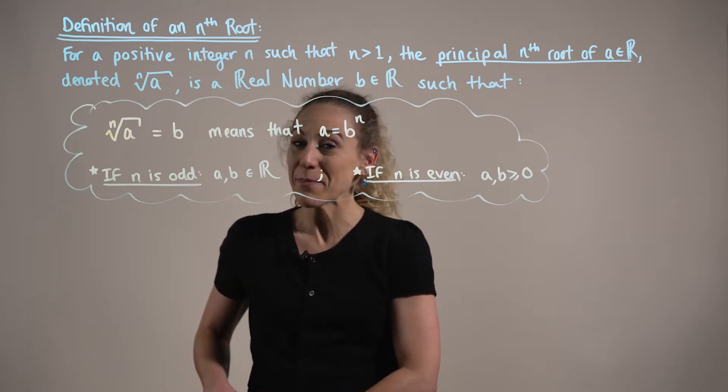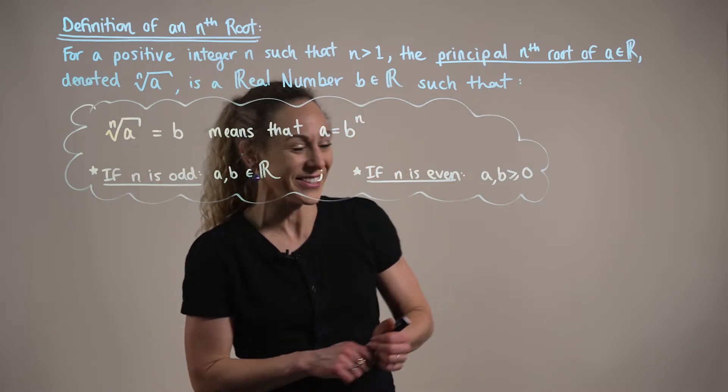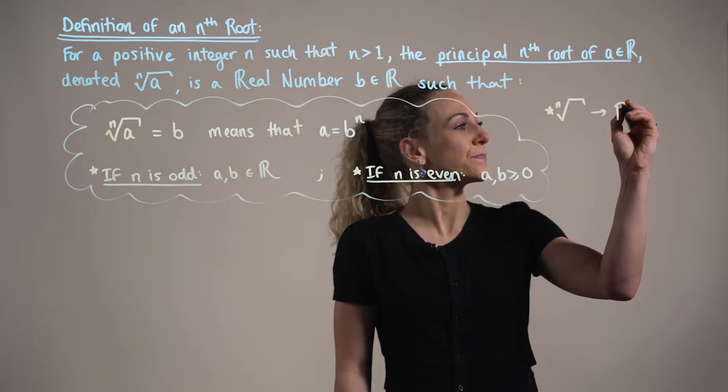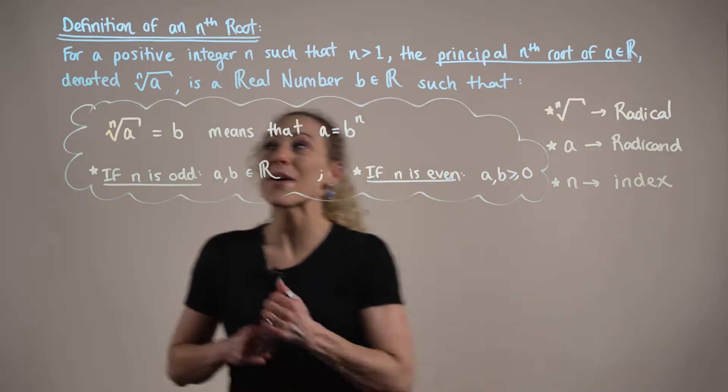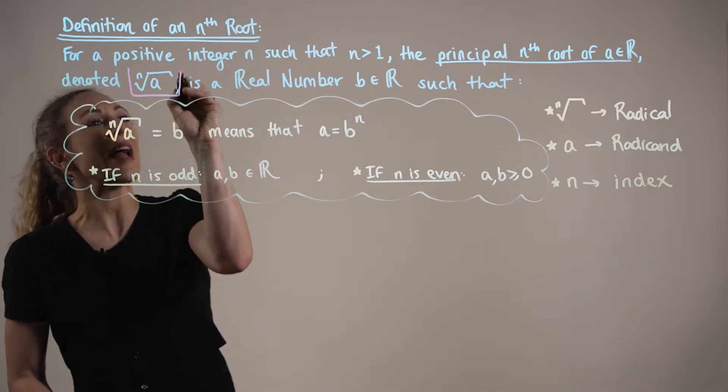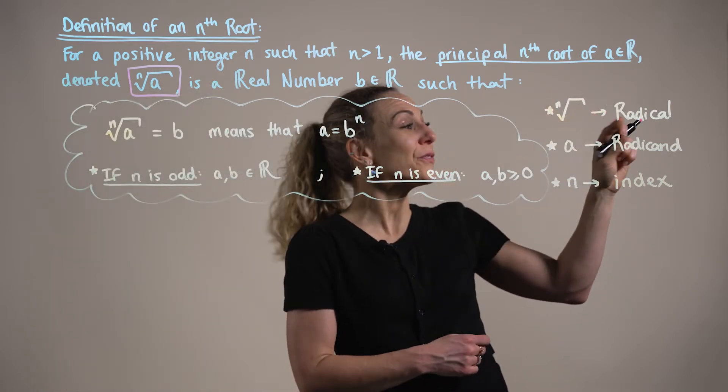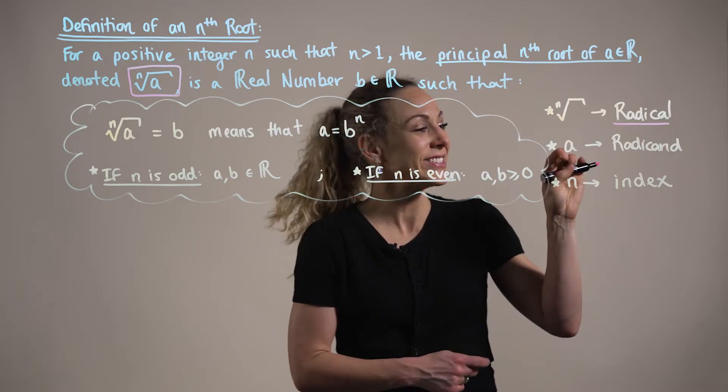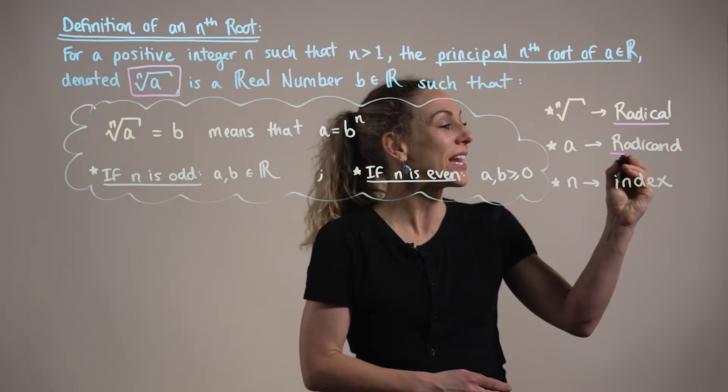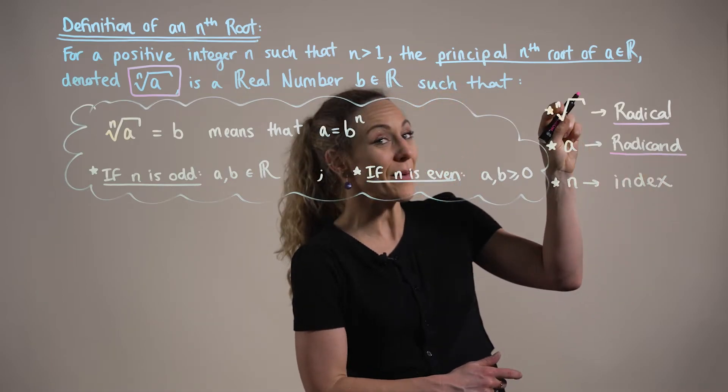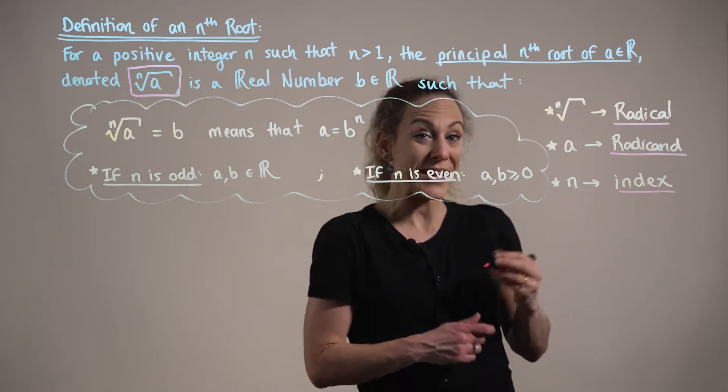Now, before looking at some examples, let's consider some of the new terminology for this notation. When we are thinking about the principal nth root of a, we want to note that this nth root is referred to as the radical, the number a, or the inside, is referred to as the radicand, and then the number in the pocket, in our radical pocket, is called the index, or the root index.